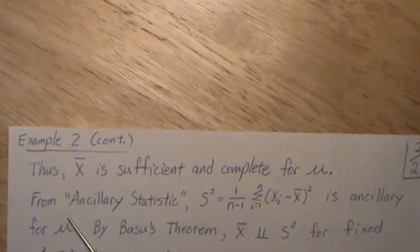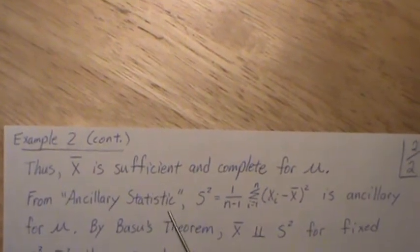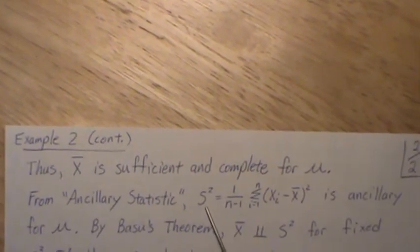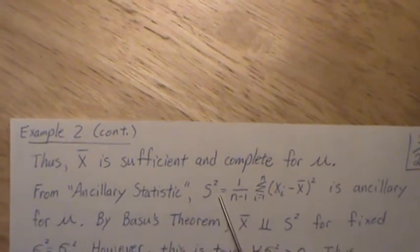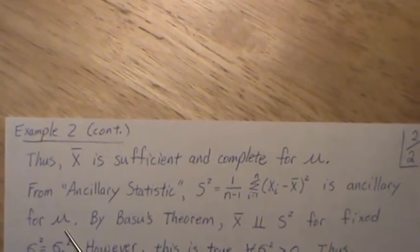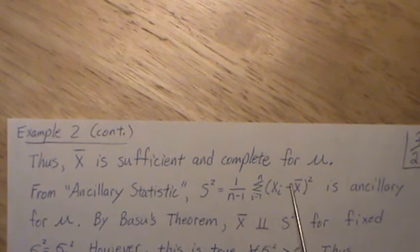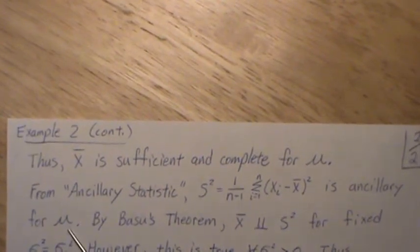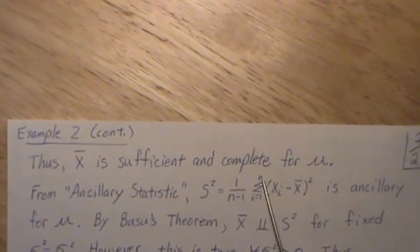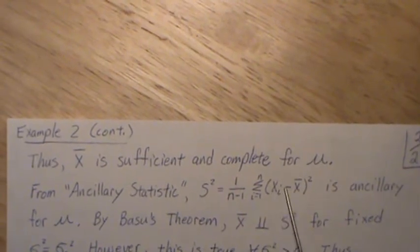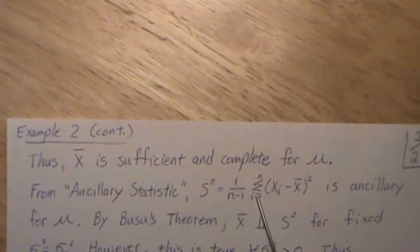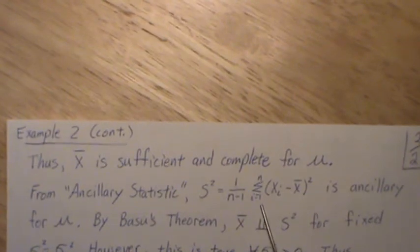Now in a video that I called ancillary statistics, we showed that the distribution of s squared is ancillary for mu. So this distribution does not depend upon mu. It depends upon the sigma squared. But in this case, the known fixed constant sigma not squared.